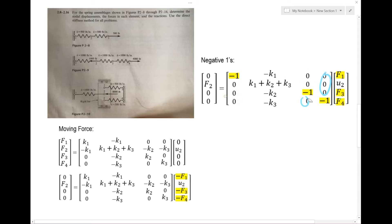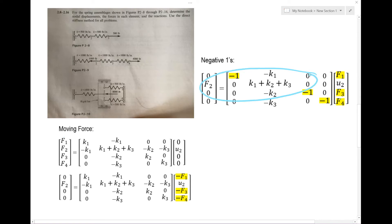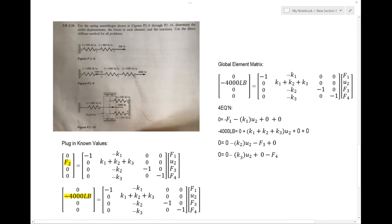Now we've successfully moved all our unknowns to the right-hand side, and all of our known values are on the left-hand side. Let's move on.